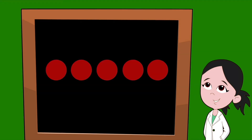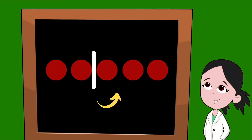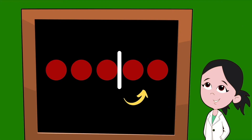Let's use dots to represent our numbers. To find partners, we simply split up the dots. We're going to use a line. So here, we would have one dot on the left and four dots on the right. That pair of numbers is partners — one and four. To make sure we don't miss a number, we simply move our line over one dot at a time to make sure we find all the partners.